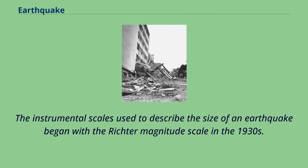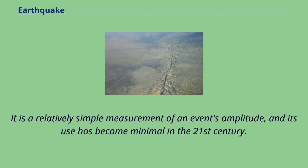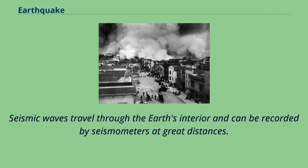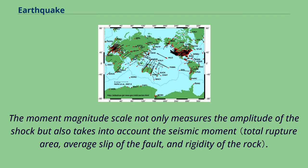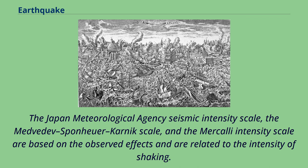The instrumental scales used to describe the size of an earthquake began with the Richter magnitude scale in the 1930s, a relatively simple measurement of an event's amplitude whose use has become minimal in the 21st century. The surface wave magnitude was developed in the 1950s as a means to measure remote earthquakes and improve accuracy for larger events. The moment magnitude scale not only measures the amplitude of the shock but also takes into account the seismic moment. The Japan Meteorological Agency Seismic Intensity Scale, the Medvedev-Sponheuer-Karnik scale, and the Mercalli Intensity Scale are based on observed effects and are related to the intensity of shaking.